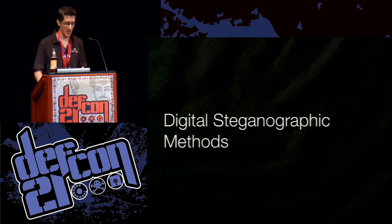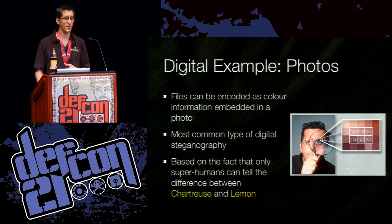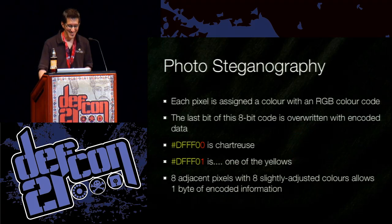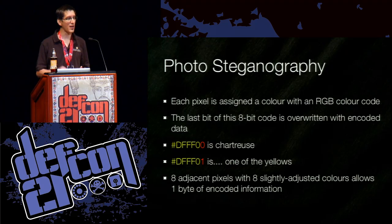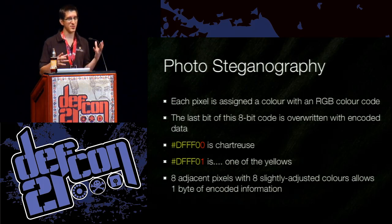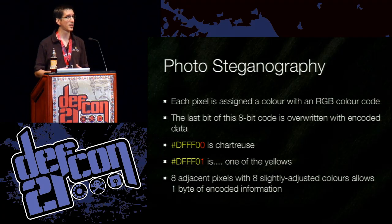Now let's take a look at some digital steganographic methods. The first example is photographs — one of the most common types of digital steganography. You can encode one file as color information inside a photo. This uses the fact that only superhumans can tell the difference between lemon and chartreuse. Each pixel is assigned a color with an RGB color code, and the very last bit of this color code will always be part of the secret message you're encoding. For example, DFFF00 is chartreuse — that last zero is part of the message. DFFF01 is similar but imperceptibly different. Eight adjacent pixels yields one byte of encoded information.